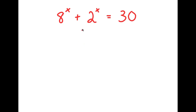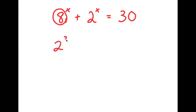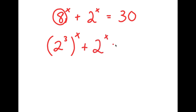In this problem, I have 8 to the power of x plus 2 to the power of x is equal to 30. I'm going to first start by rewriting 8 as 2 to the power of 3. So now I have 2 to the power of 3 to the power of x plus 2 to the power of x is equal to 30.